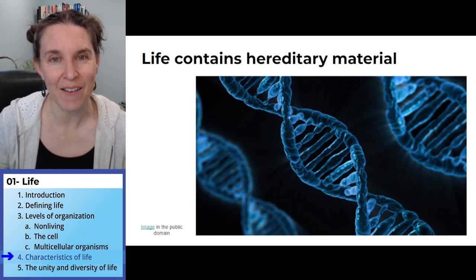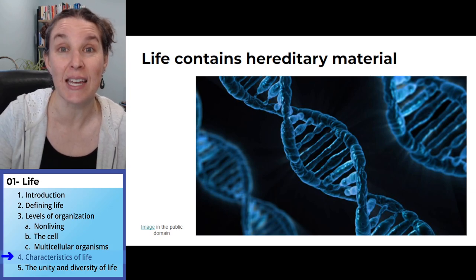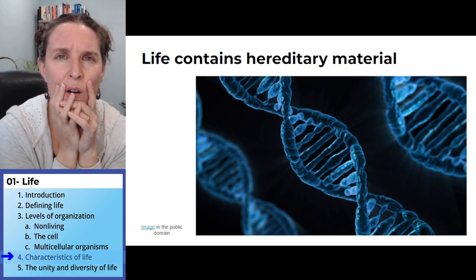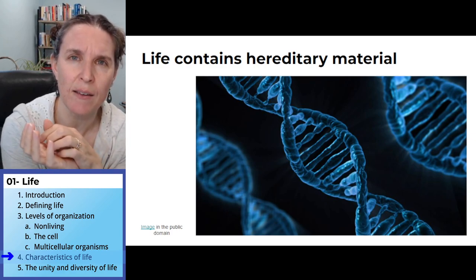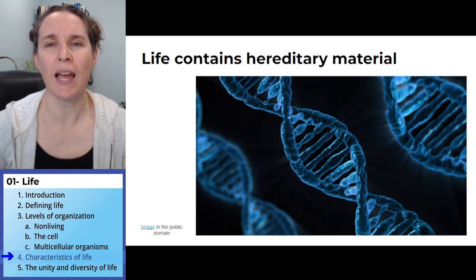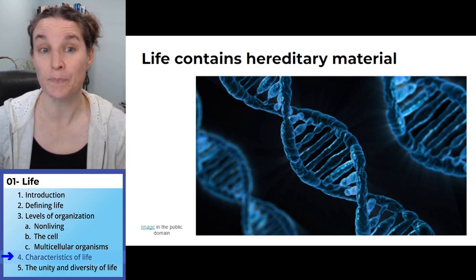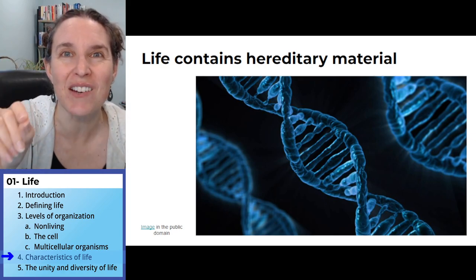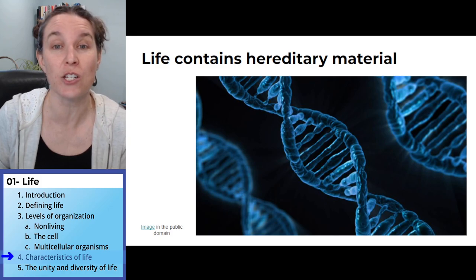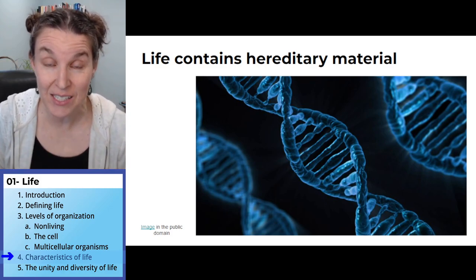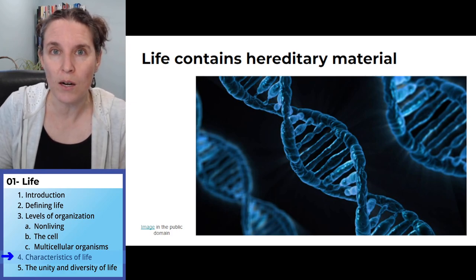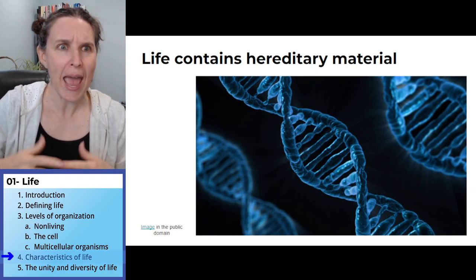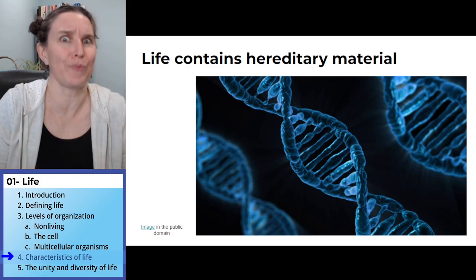All living systems have hereditary material. In most cases this is DNA. I know there are viruses that only have RNA - RNA and DNA are both examples of hereditary materials. Hereditary materials let you pass information from generation to generation, and they provide the instructions for building who you are. We'll have three lectures talking about how the hereditary material works, and another three talking about how heredity works.